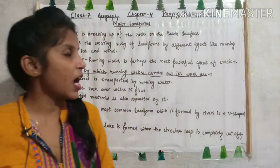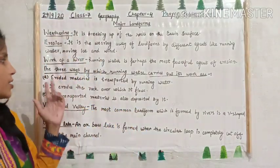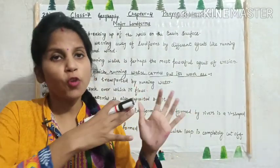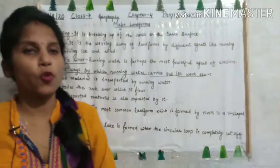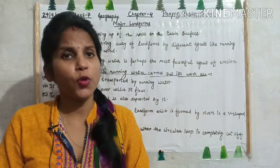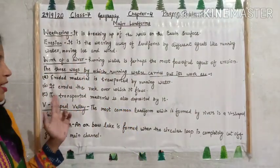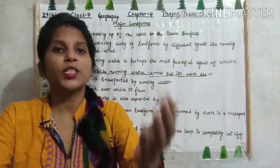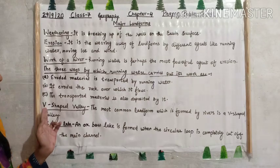The three ways running water does erosion are: first, eroded material is transported by running water — whatever material it erodes or breaks down, it carries along with it. Second, it erodes the rock over which it flows — as it travels, the rocks along its path get worn down and eventually break down. Third, the transported material is also deposited by it — all the material it erodes and carries, it also deposits.